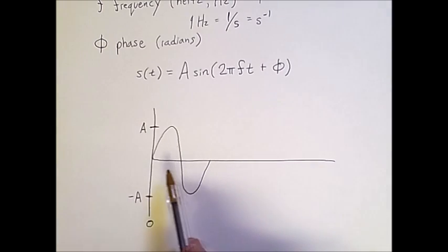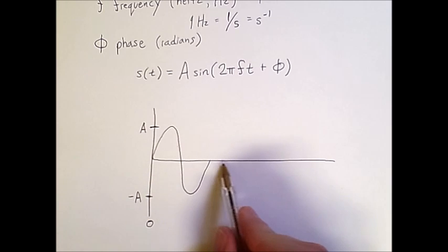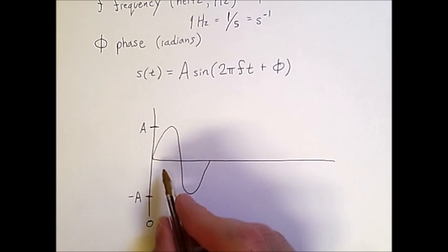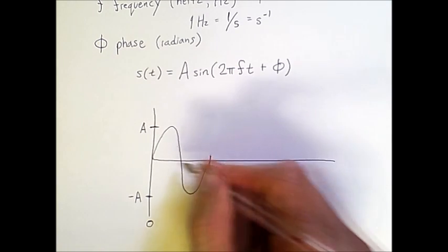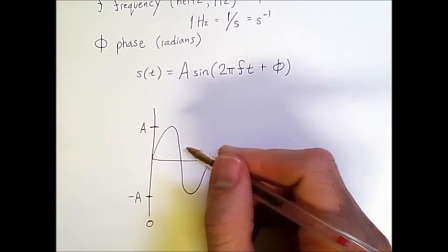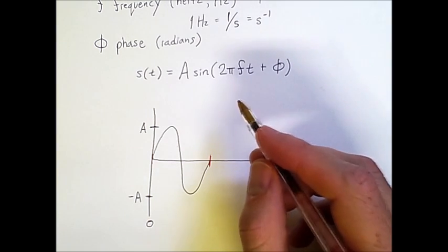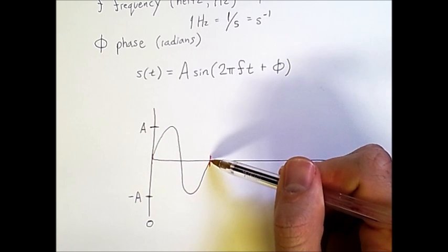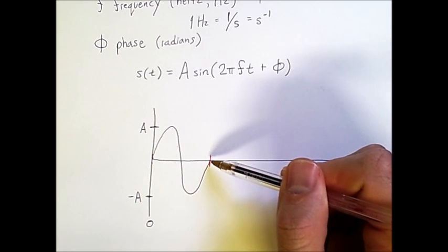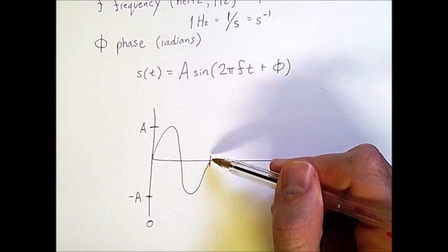As I mentioned before, the time from here to here is the period. Because of how we're drawing this function, this axis represents time. So the period is the difference between the time at this point and the time at this point. If we change the frequency f, what we're saying is we're changing the number of times this wave repeats within one period. So this default sine wave corresponds to a frequency of one.